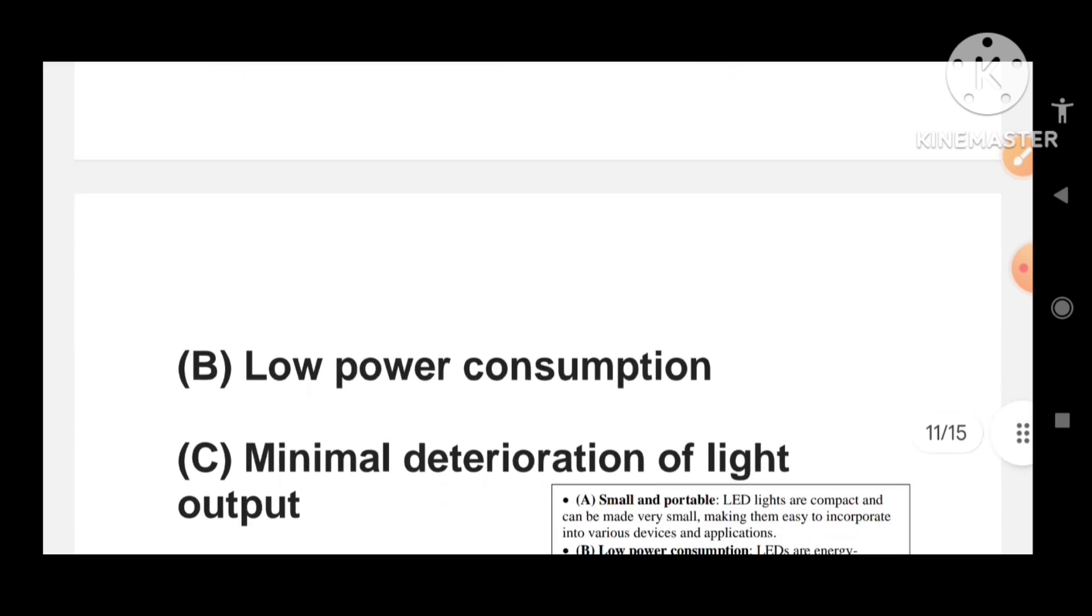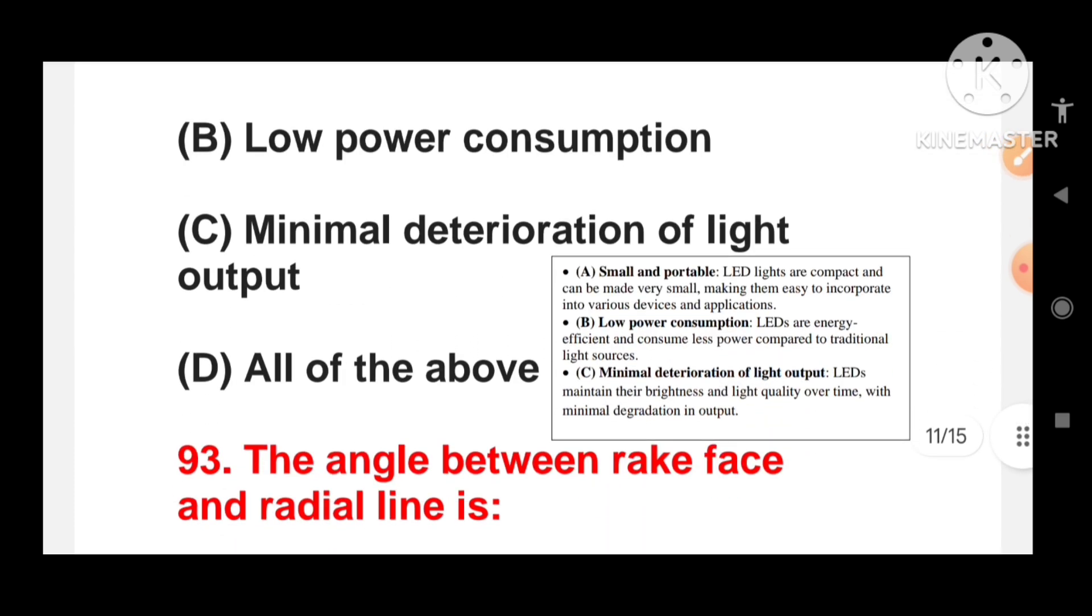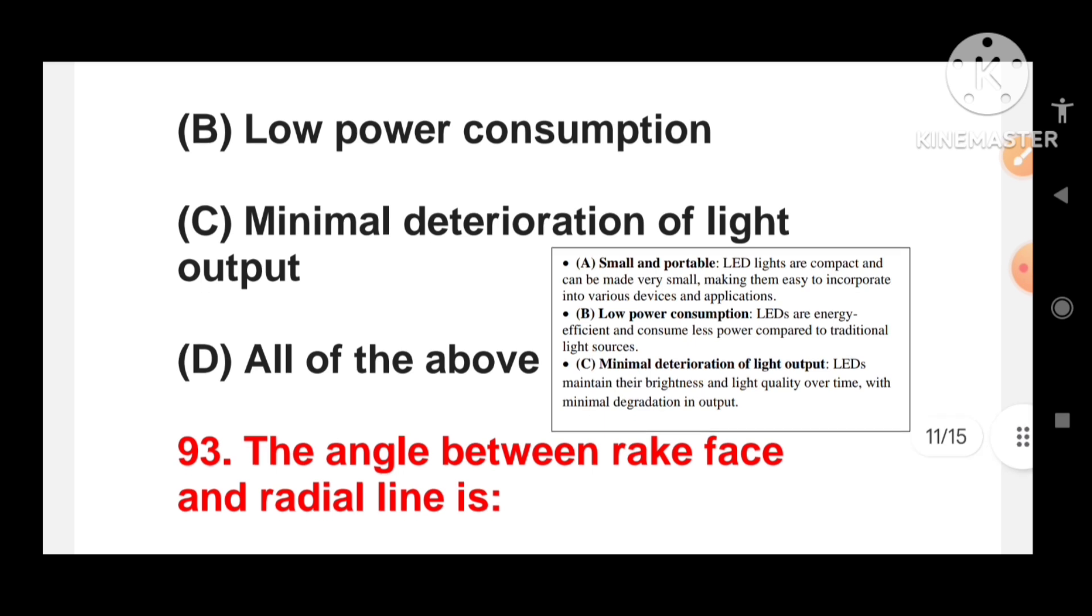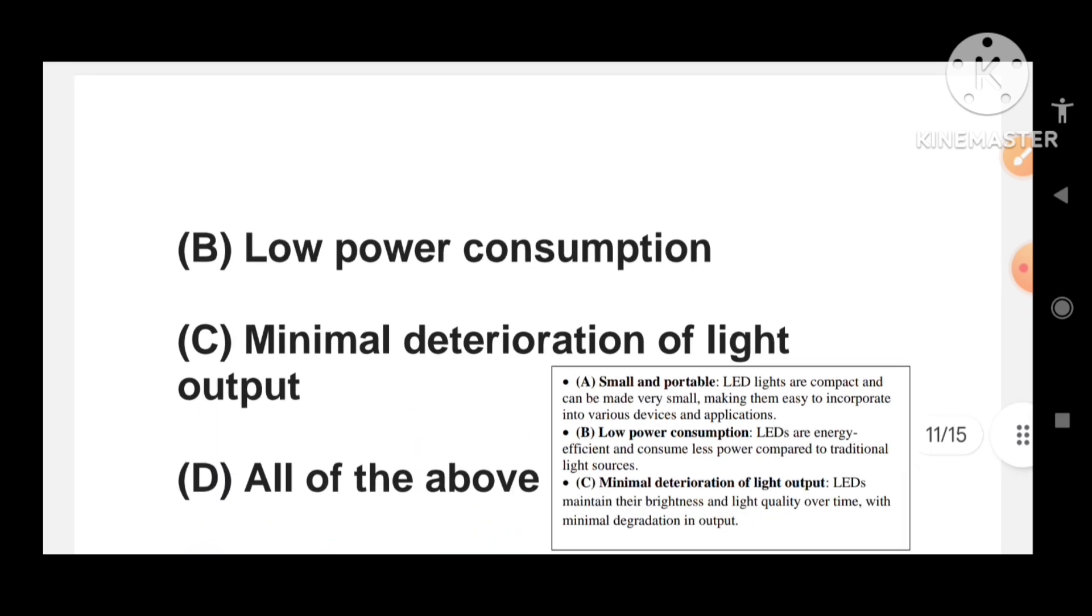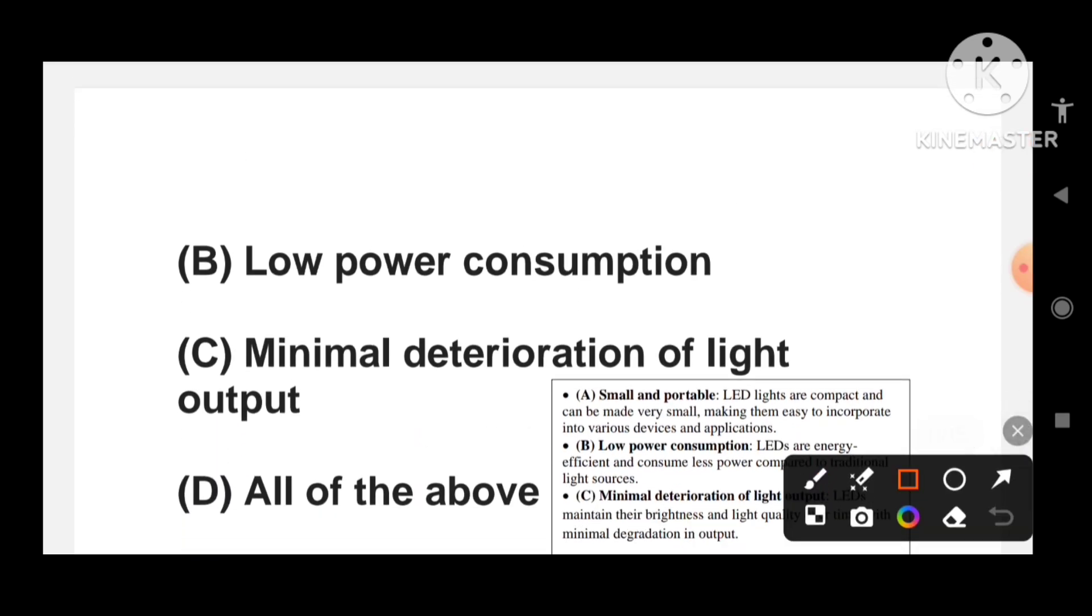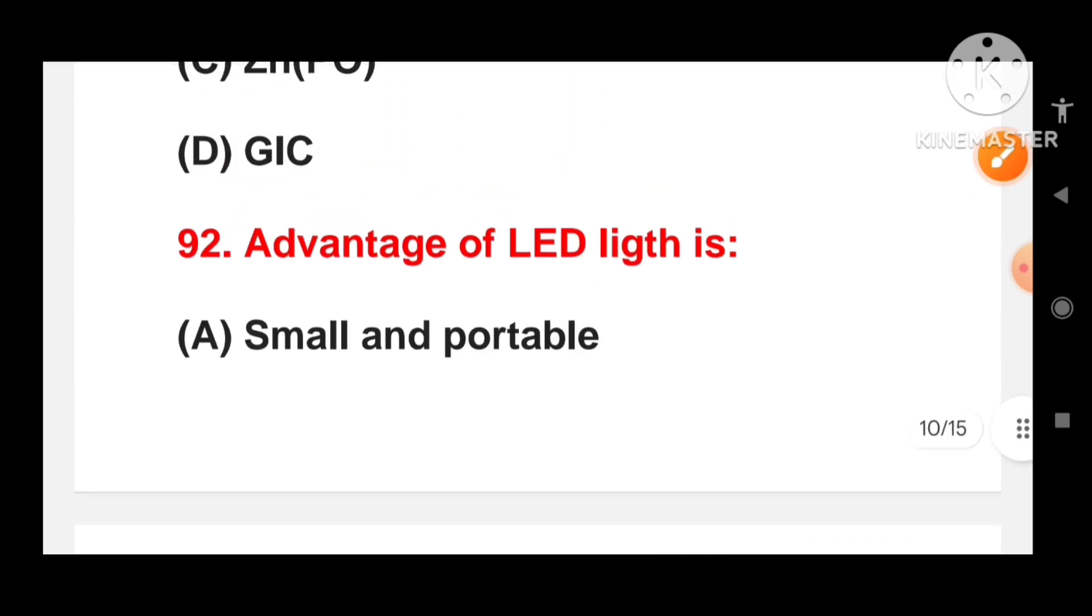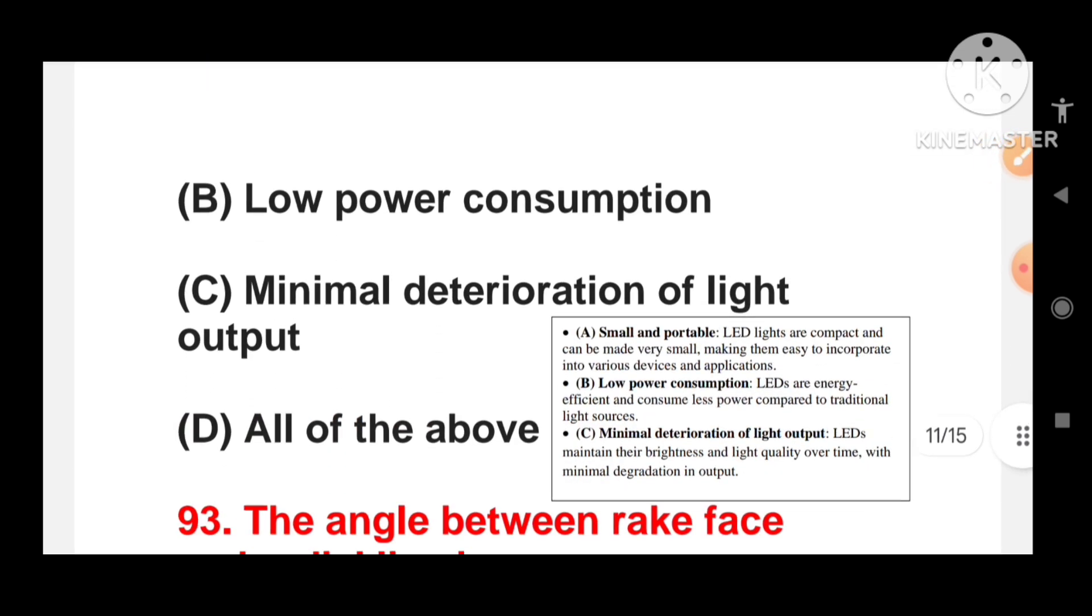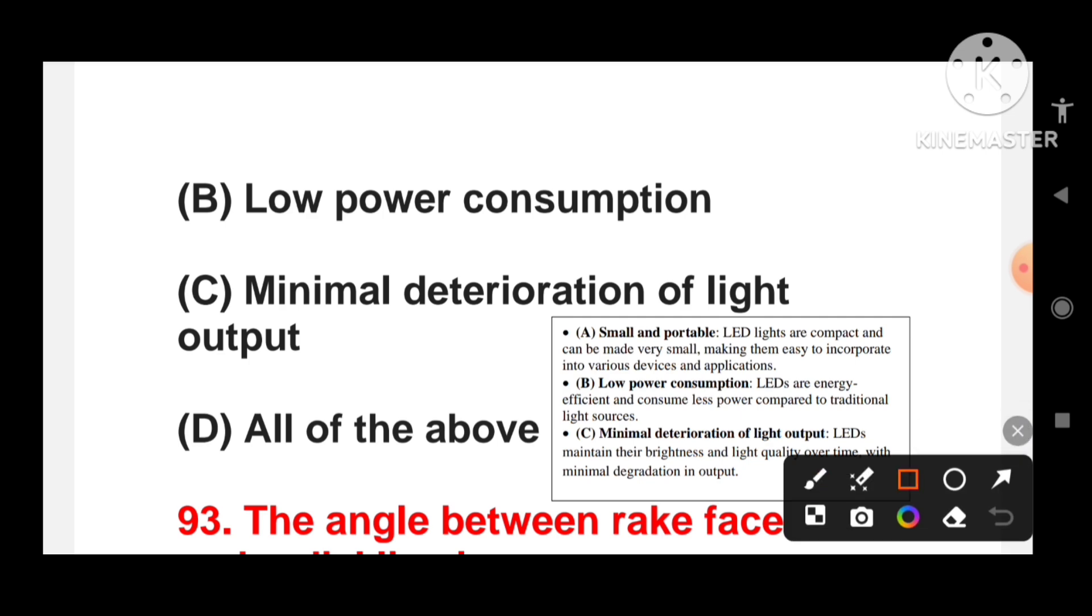Next question is advantages of LED light is: small and portable, low power consumption, minimal deterioration of light output or all of the above? The answer is all of the above. These are the advantages of LED light - small and portable, low power consumption, and minimal deterioration of light output. They maintain their brightness and light quality over time with minimal degradation in output.